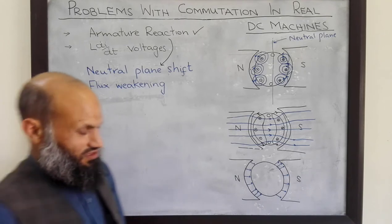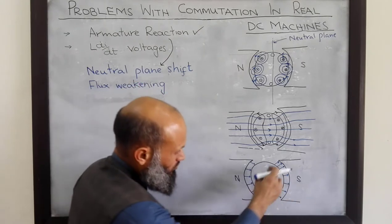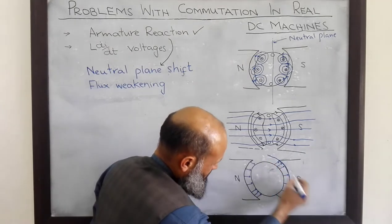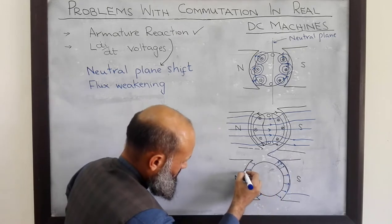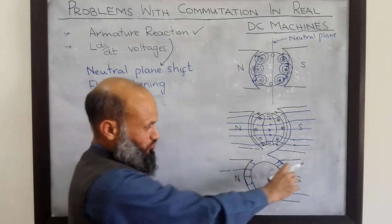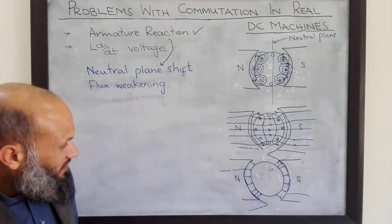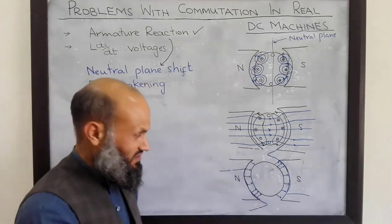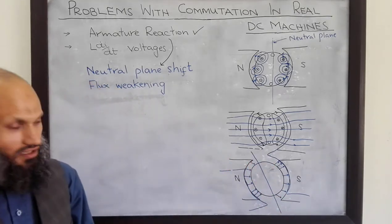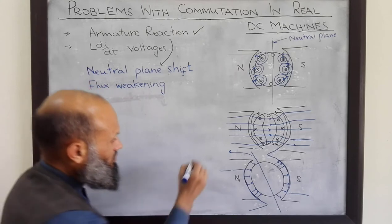This situation is as if we have moved the poles — the north pole and the south pole — from this location to a new location. The poles are still at the same position; however, the effect is as if we have moved the poles to a new location. And hence, the plane at which the flux density is zero also shifts. So the new neutral plane is over here — the plane at which flux density is zero has been shifted.